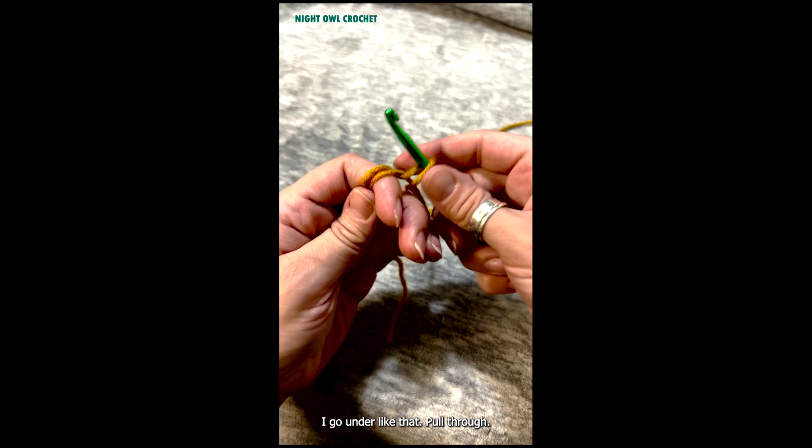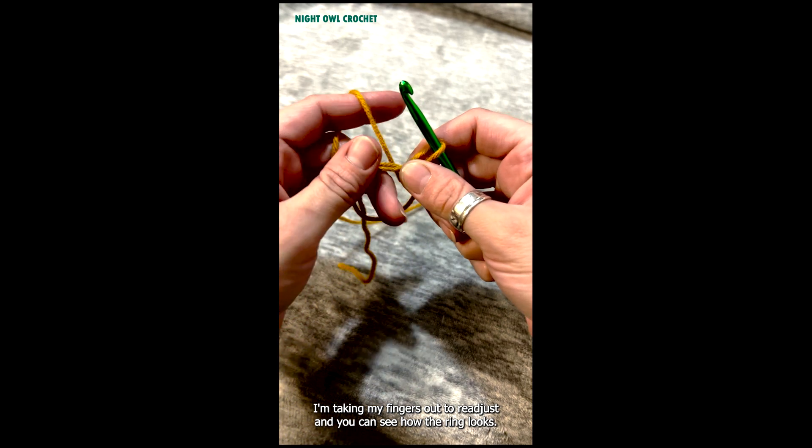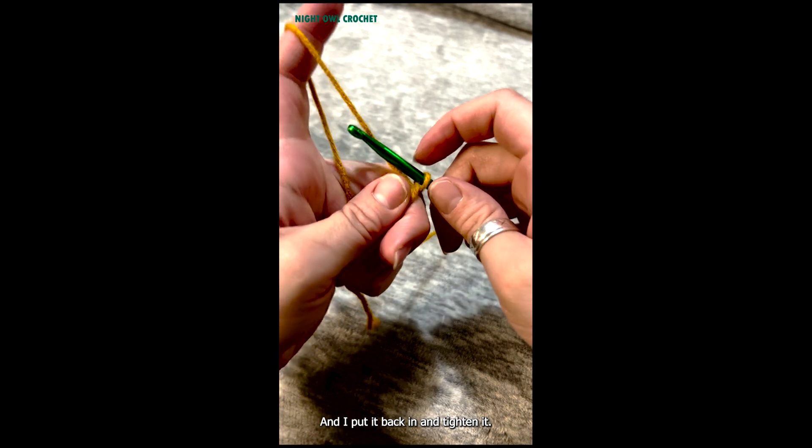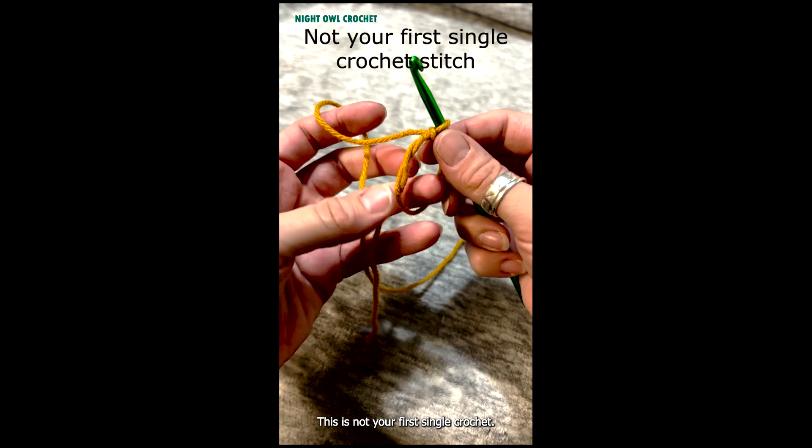I go under like that, pull through. I'm taking my fingers out to readjust and you can see how the ring looks. I put it back in and tighten it. This is not your first single crochet.